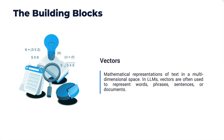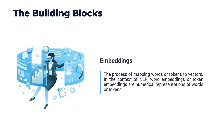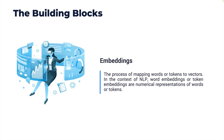Vectors are the mathematical representations of text in a multi-dimensional space. In LLMs, vectors are often used to represent words, phrases, sentences, or sometimes entire documents. Vectors are how we typically store tokens — when we pass text through the embeddings model, we get back a set of tokens stored as vectors, which map the actual meaning of the word into context. It's important to understand the concepts of tokens, vectors, and embeddings.